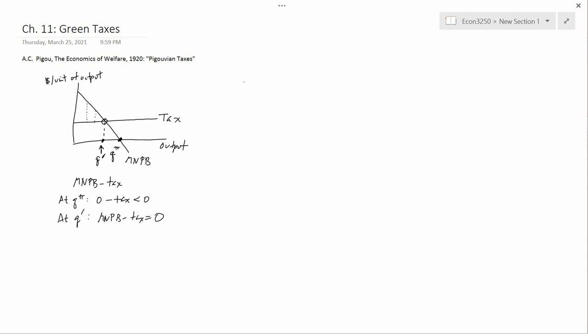This then raises the question, how can the government use a tax to get the firm to produce the socially optimal level of output?